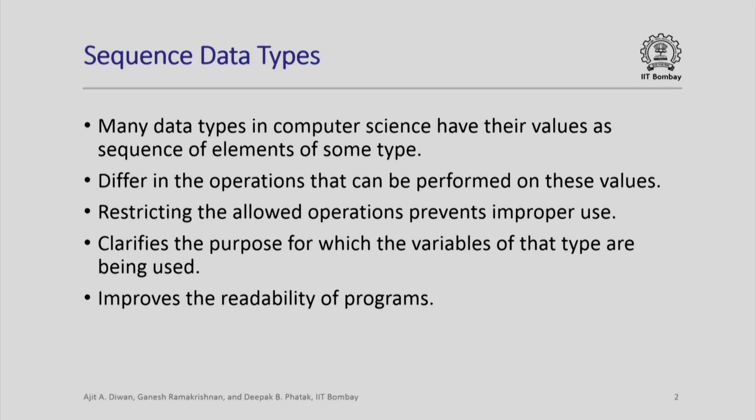Anyone reading your program would also understand what you are going to do, because once you declare that your variable is of that type, it defines what operations are going to be performed on it and nothing else. Although the values of these data types are all sequences of a certain type, the operations performed are different, and therefore they are considered to be different abstract data types.